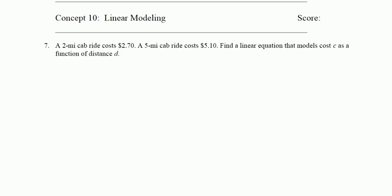In this linear modeling problem, I've got a 2 mile cab ride costs $2.70, a 5 mile cab ride costs $5.10. Find a linear equation that models cost c as a function of distance d. So in order to do that, I'm going to need a slope and a point. I've got 2 points, let's go ahead and record those. I'm modeling c, so that's a d comma c type relationship. My distance here is 2 miles, has a cost of 2.7. And my distance here is 5 miles, has a cost of 5.1.